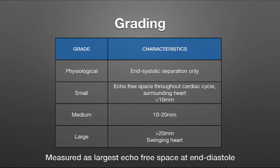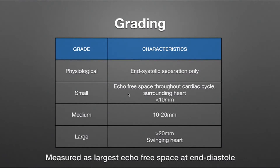If you do see fluid around the heart, it's important to estimate whether it is small, medium, or large in size, by measuring the largest echo-free space at end diastole. Physiologically, we can have 10–20 mls of fluid in the pericardial space normally, seen only at end systole. If you see an echo-free space throughout the cardiac cycle less than 10 mm, that is a small pericardial effusion. A medium effusion is 10 to 20 mm, and a large effusion is greater than 20 mm.